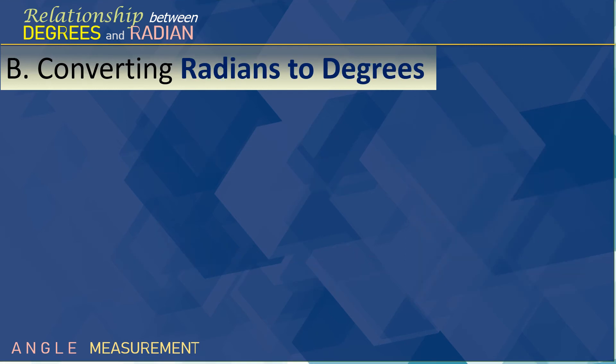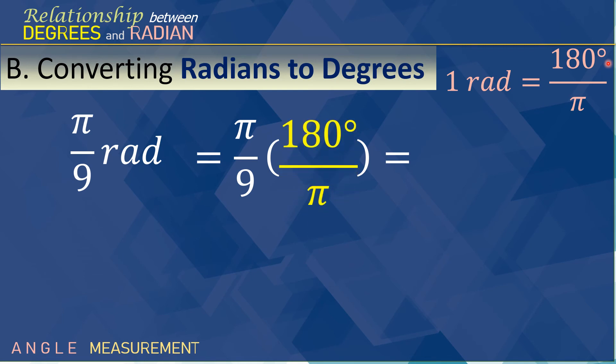Let's go back now. So, we are converting radians to degrees. Well, 1 radian is equal to 180 degrees over pi. So, we will use this as our guide in rewriting and converting radians to degrees. Let's have number 1. Pi over 9 radians. That pi over 9 will be multiplied to 180 degrees over pi. Obviously, we need to cancel out pi here. The answer is 20 degrees. So, pi over 9 is 20 degrees.